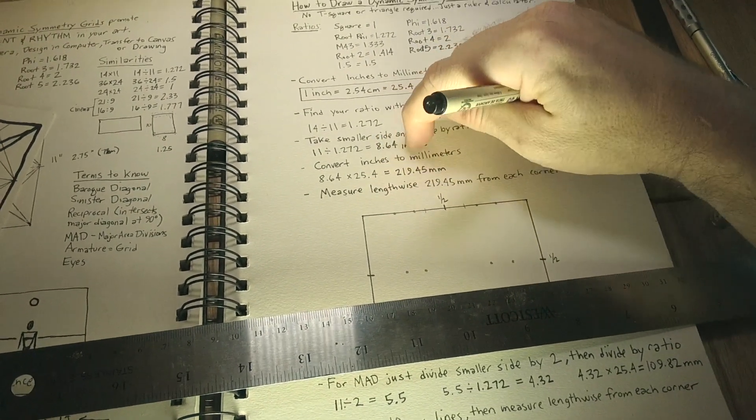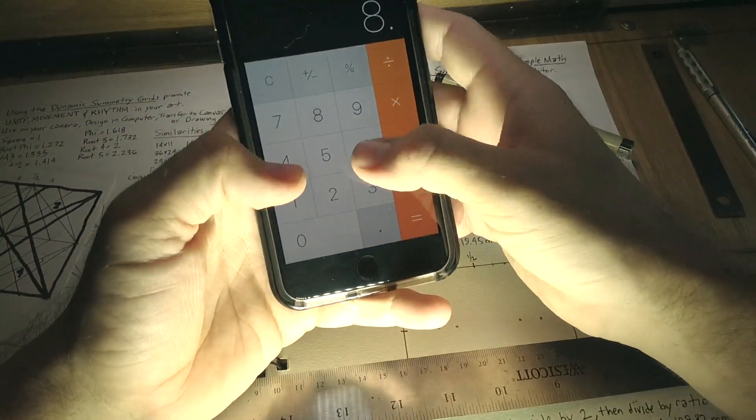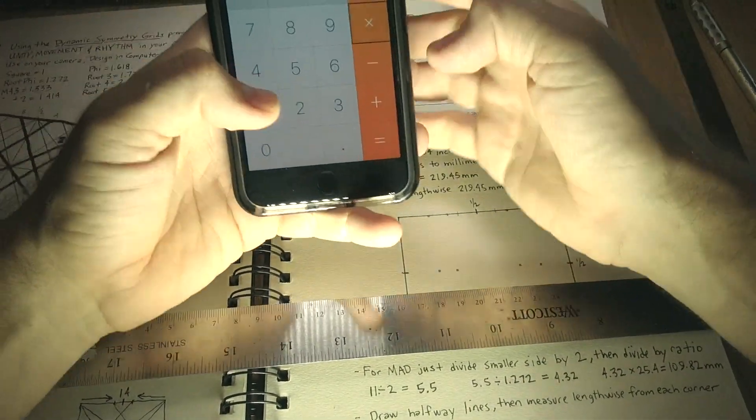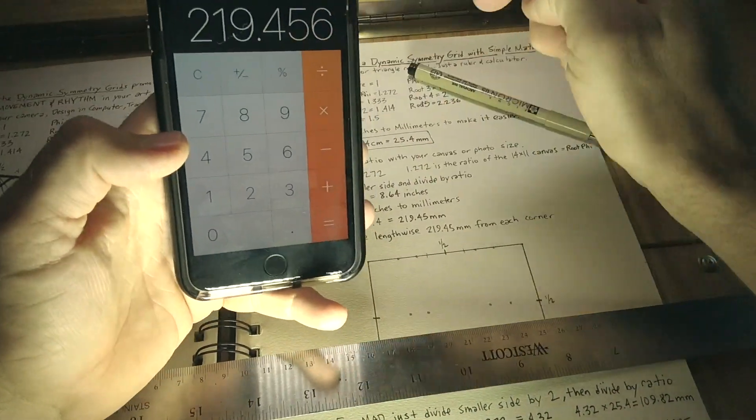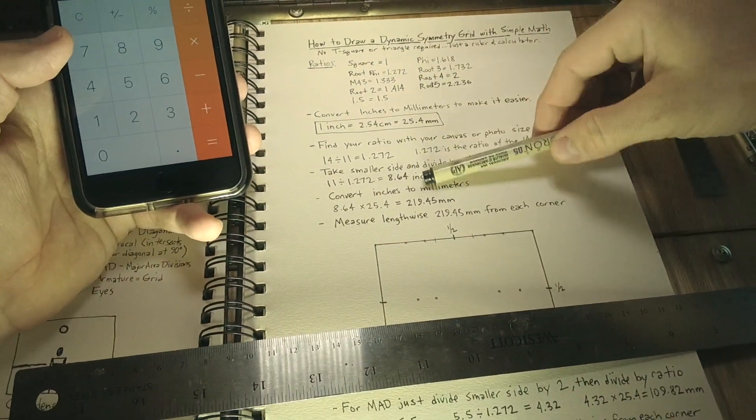So let's just convert 8.64 inches, 8.64, and we multiply it by the millimeters found in this key up here, 25.4. So we've got 219.45 millimeters.